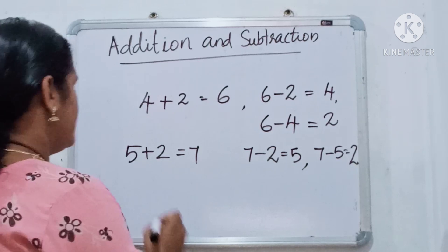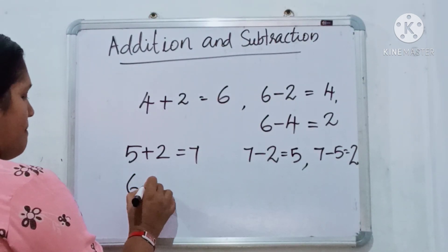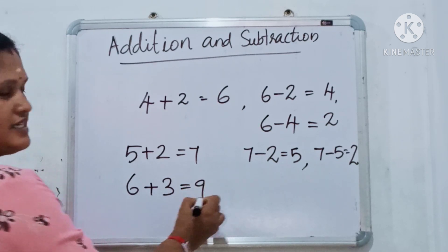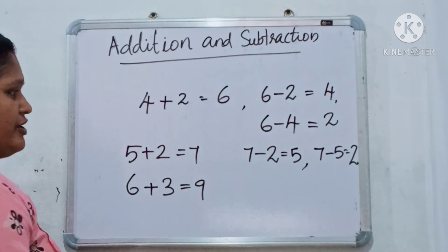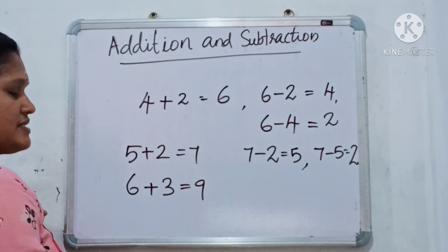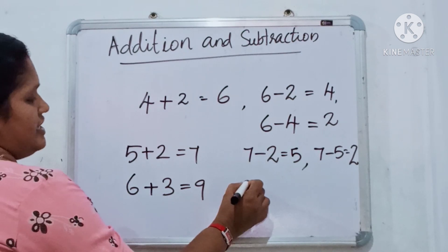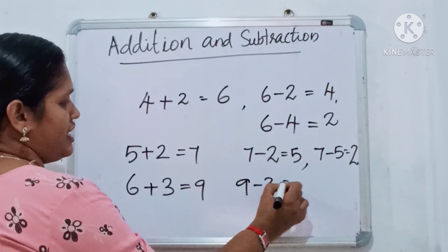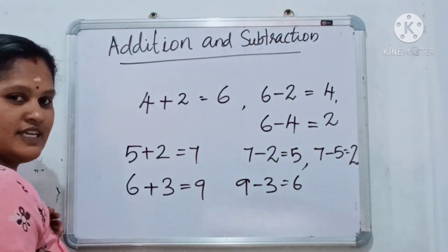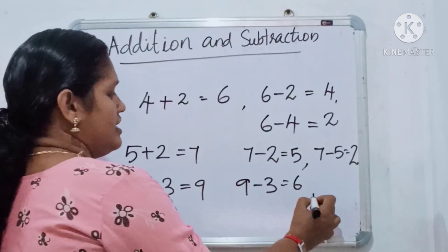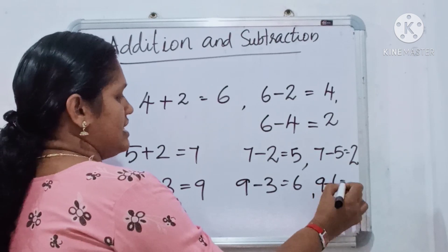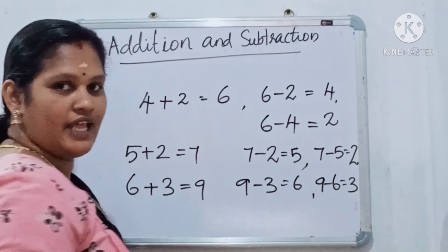Next: 6 plus 3 equals 9. Clear? How do we use subtraction here? 9 minus 3 equals 6. Clear? One more: 9 minus 6 equals 3. Clear?